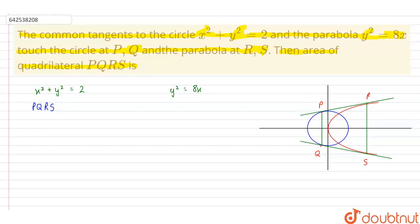So to do that first we will assume a tangent to the parabola so its equation will be y = mx + 2/m.